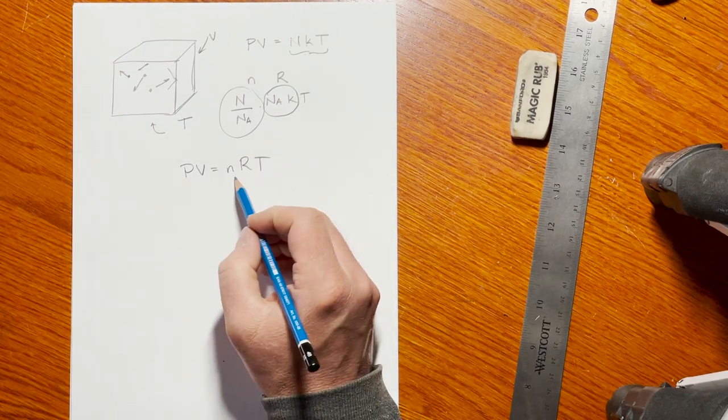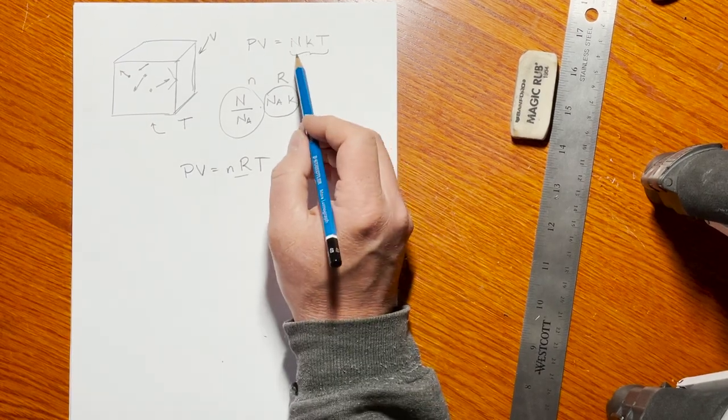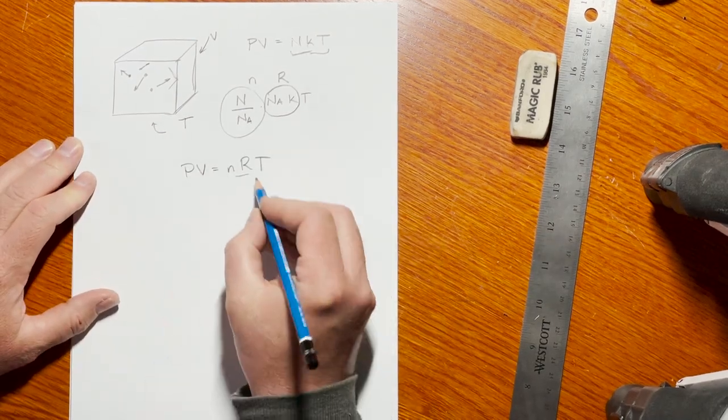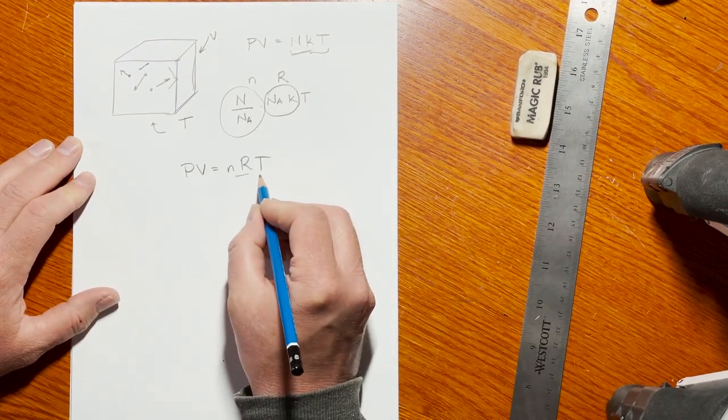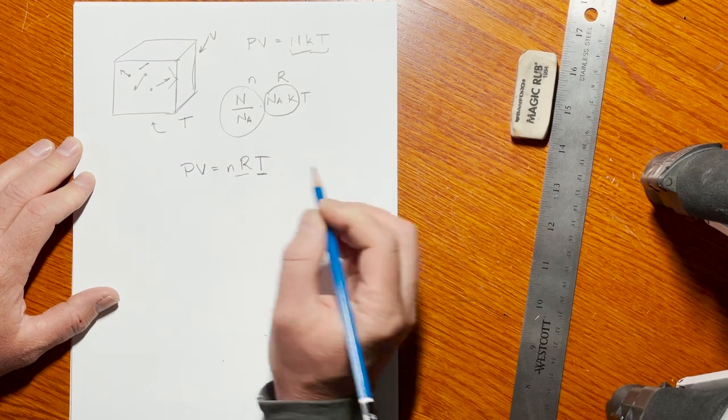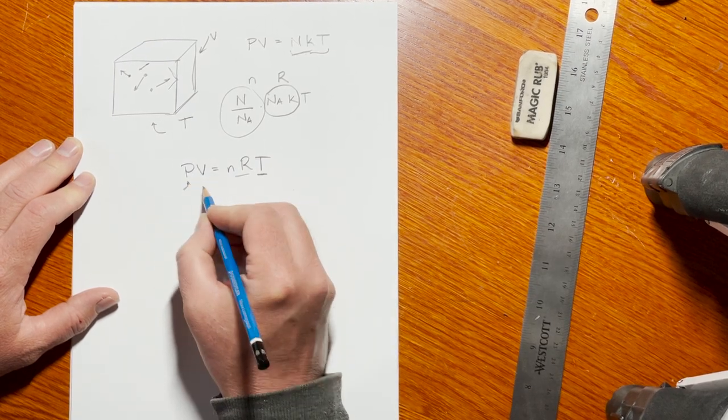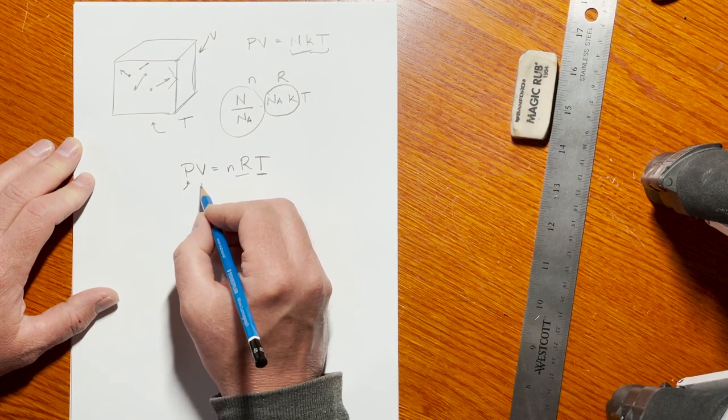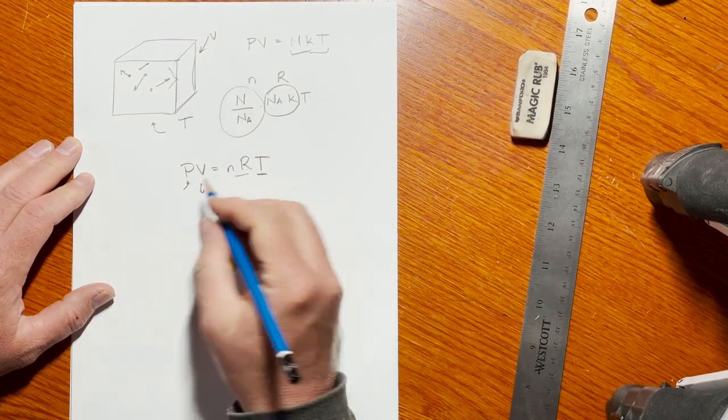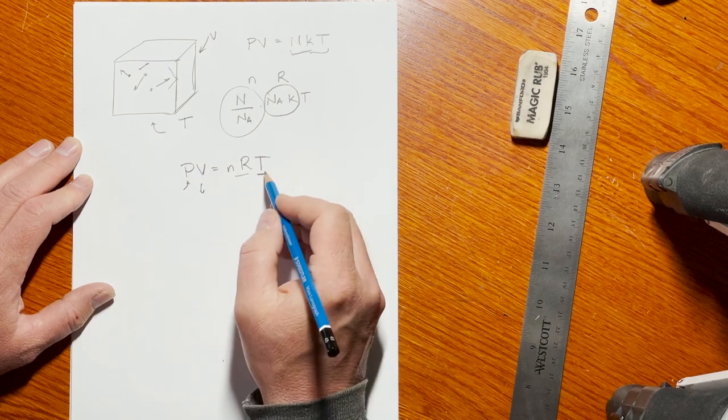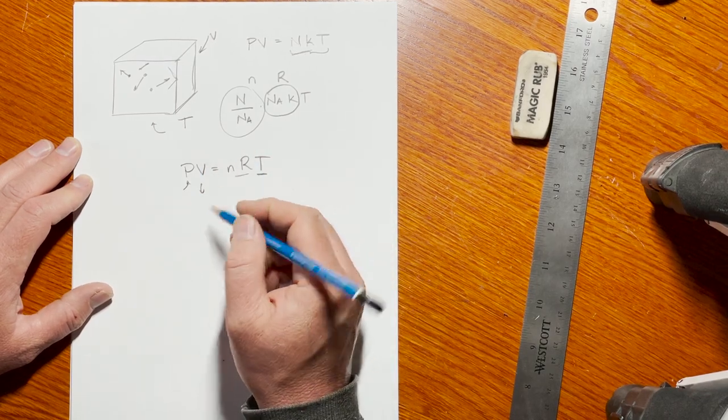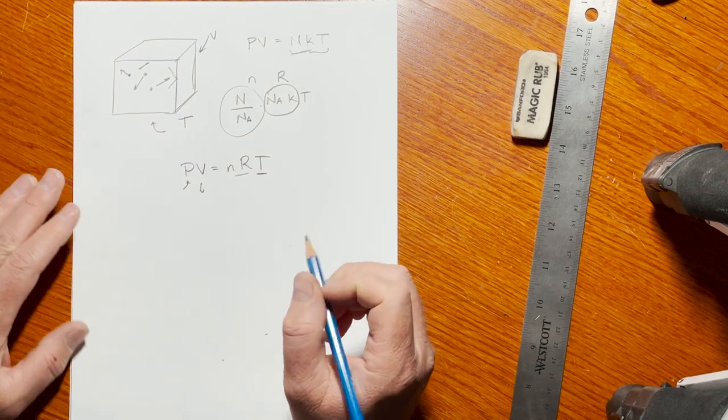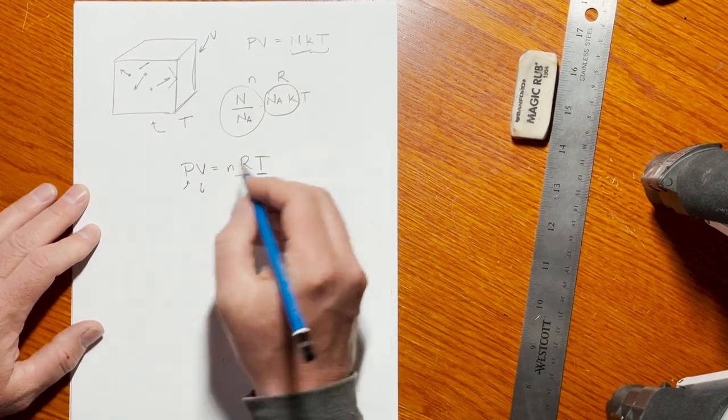This shows the relationship between the molar gas constant and Boltzmann's constant. What this relationship says is that if we keep the temperature constant and raise the pressure, the volume has to go down. So pressurizing a gas compresses it. If we expand a gas keeping the temperature the same, the pressure has to go down. There's an inverse relationship between pressure and volume. It also allows us to compute this pressure and volume relationship.